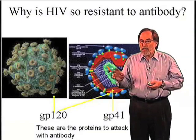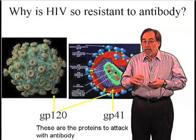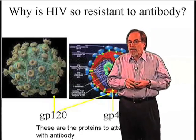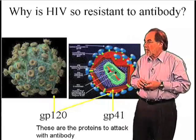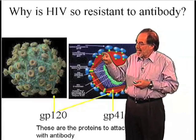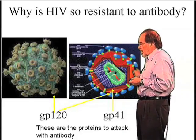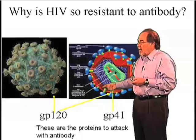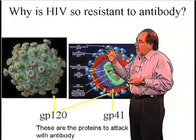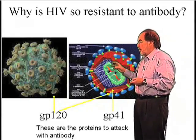Let me spend just a minute on why HIV is so resistant to antibody, because basically almost all other viruses are sensitive. Antibodies have to attack a virus on the outside — they have to attack these spikes on the outside of the virus and cover them up, trigger them, or get rid of them, doing something that will make it impossible for the virus to bind to an infected cell.